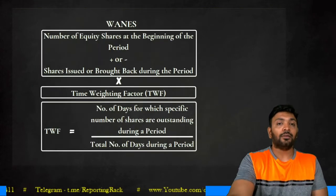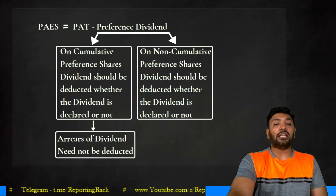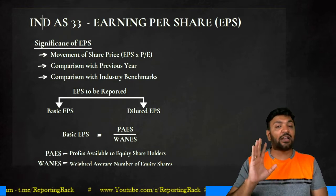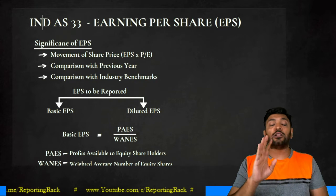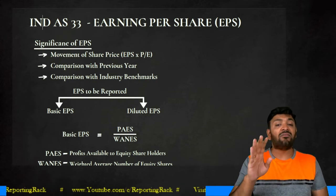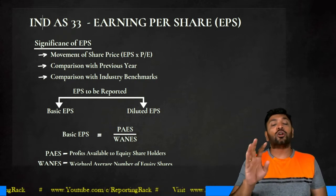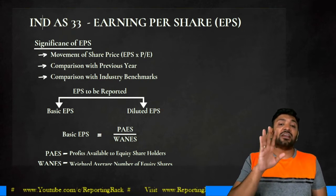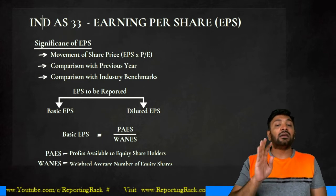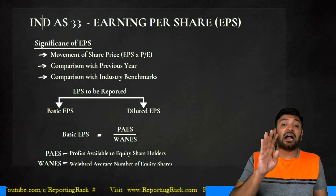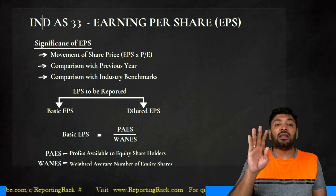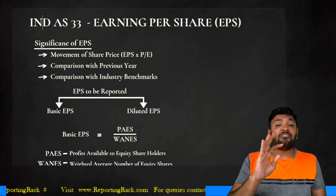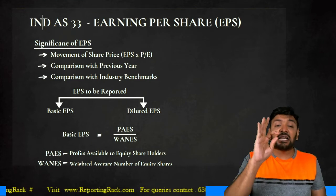To summarize the numerator: PAS equals profit after tax minus preference dividend. Profit after tax must be reduced by items adjusted to reserves that otherwise would have been debited to P&L. Preference dividend treatment depends on whether shares are cumulative or non-cumulative. That concludes our discussion on profits available to equity shareholders. Now let's come to the concept of WANES — weighted average number of equity shares, the denominator.